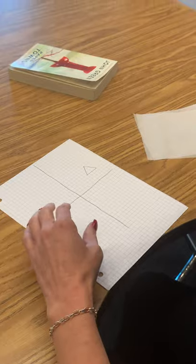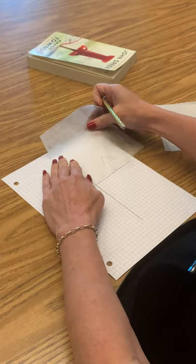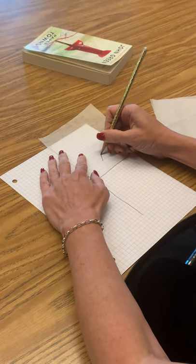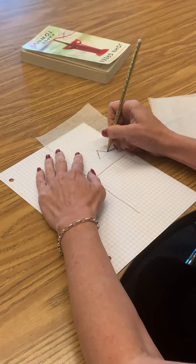Then you're going to take your patty paper and place it like this on your paper, and you're going to trace the triangle that you drew.